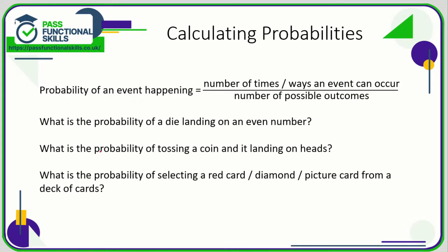Now, to calculate a probability, all we need to do is work out the number of times or the number of ways an event can occur divided by the number of possible outcomes. This might seem a bit of a complicated way of describing it, but it's dead easy when you see it in practice.